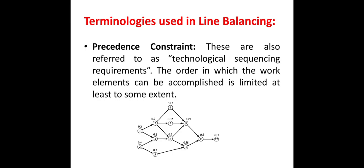A simple example is the job done in a machine shop: before performing a facing operation, a turning operation must be performed, and before performing a threading or knurling operation, turning is also mandatory. A graphical representation of precedence constraints is called a precedence diagram, as shown in the figure below.